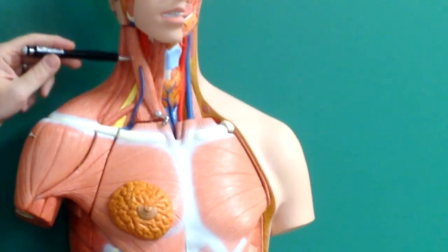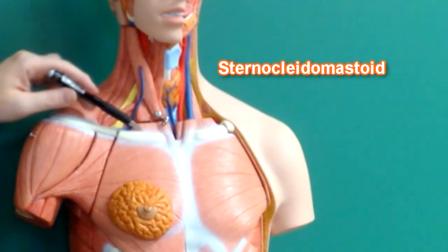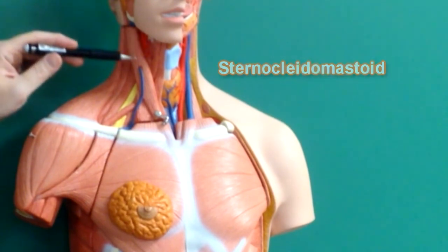This right here is the sternocleidomastoid named for its attachment to the sternum, the clavicle, and the mastoid process of the temporal bone up here.